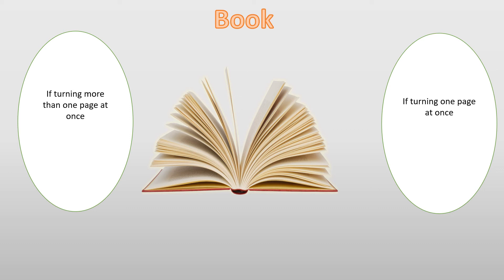For the B, the first thing is a book. If he can turn more than one page at once, like he will hold the book and will flip ten pages together, then he will be younger, one and a half years. If he can turn one page at once, he will be two years. Finished from the first B.